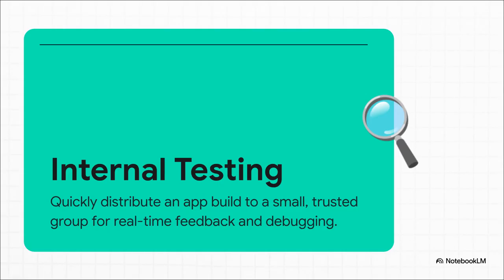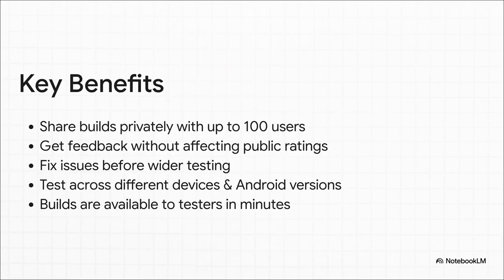Let's really zero in on internal testing. Think of it as your first line of defense. It's where you bring in your small, trusted team to find and squash those major show-stopping bugs before anyone else even has a chance to see them. The benefits are huge: you're protecting your public rating because this whole thing is private, and you get incredibly fast feedback — just minutes, not days. This means you can fix critical show-stopping issues way before you ever think about moving to a wider audience.